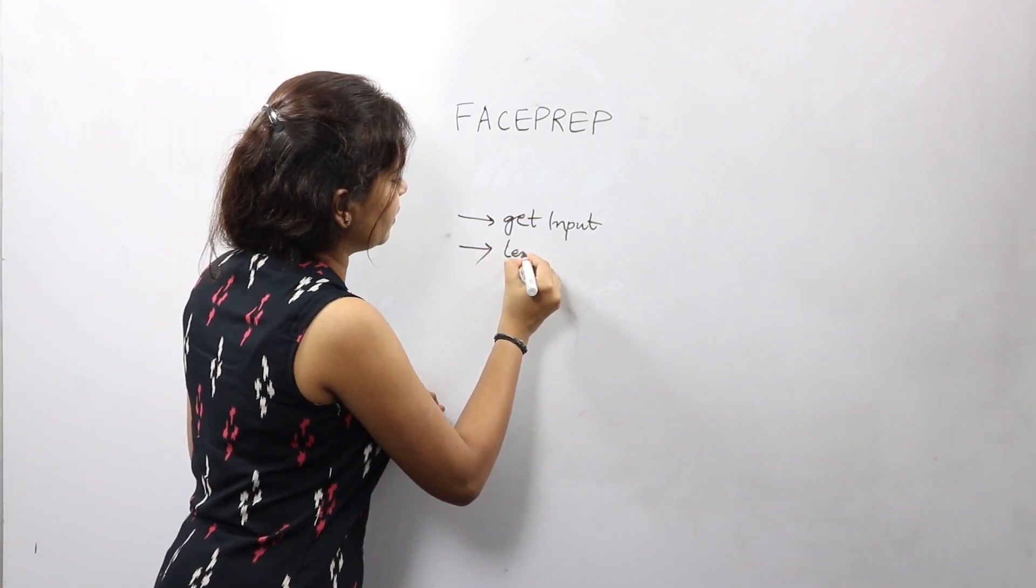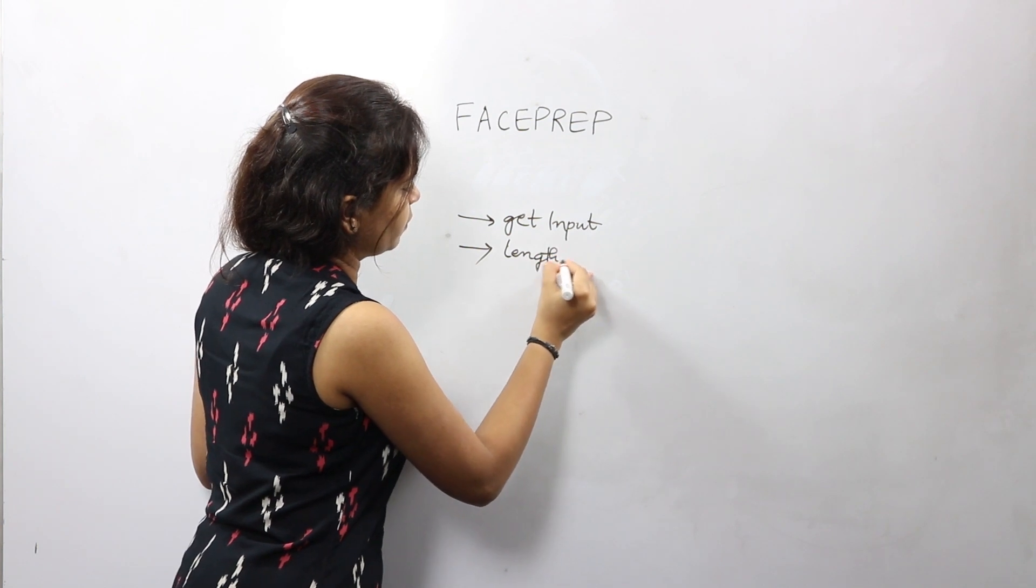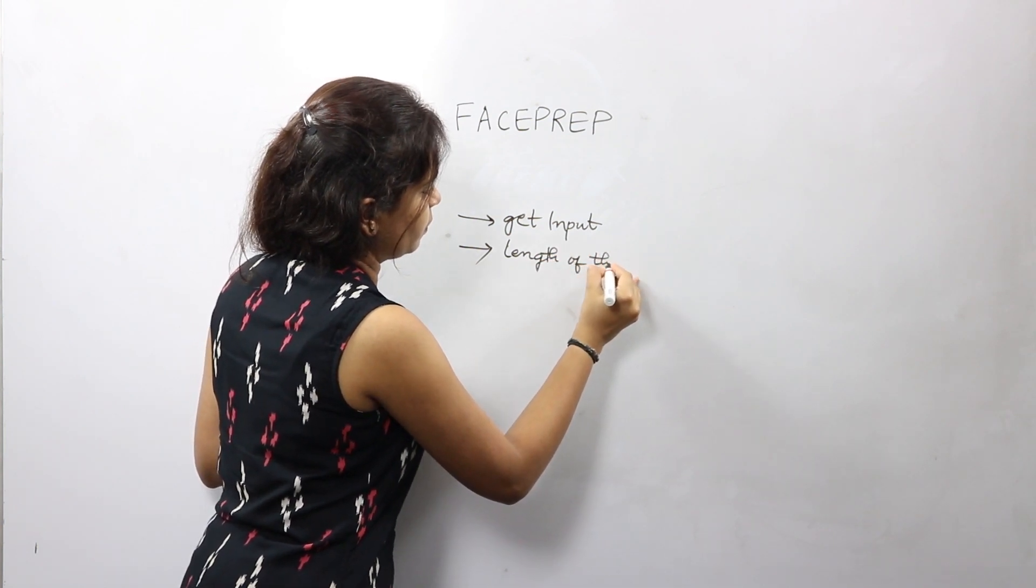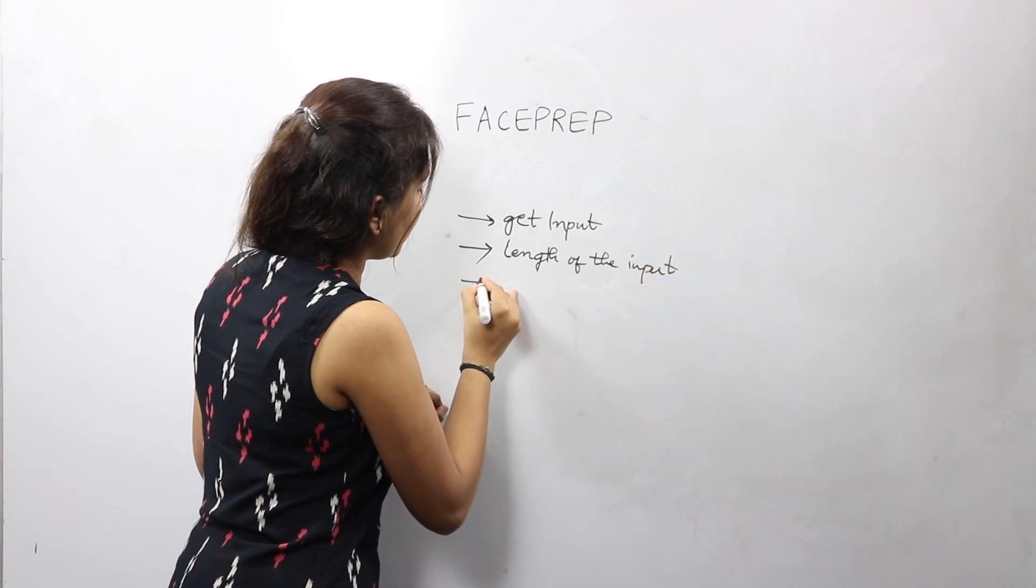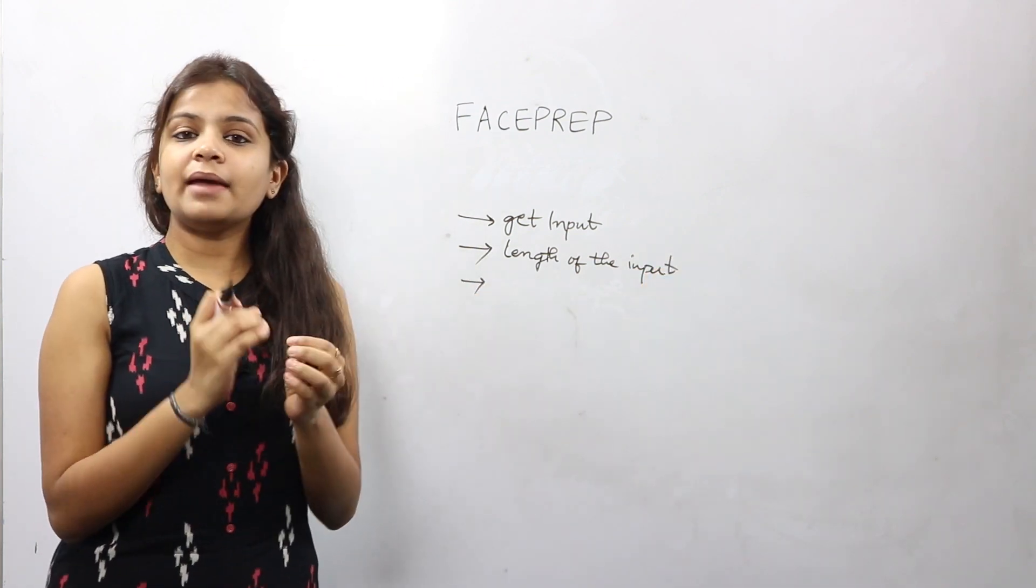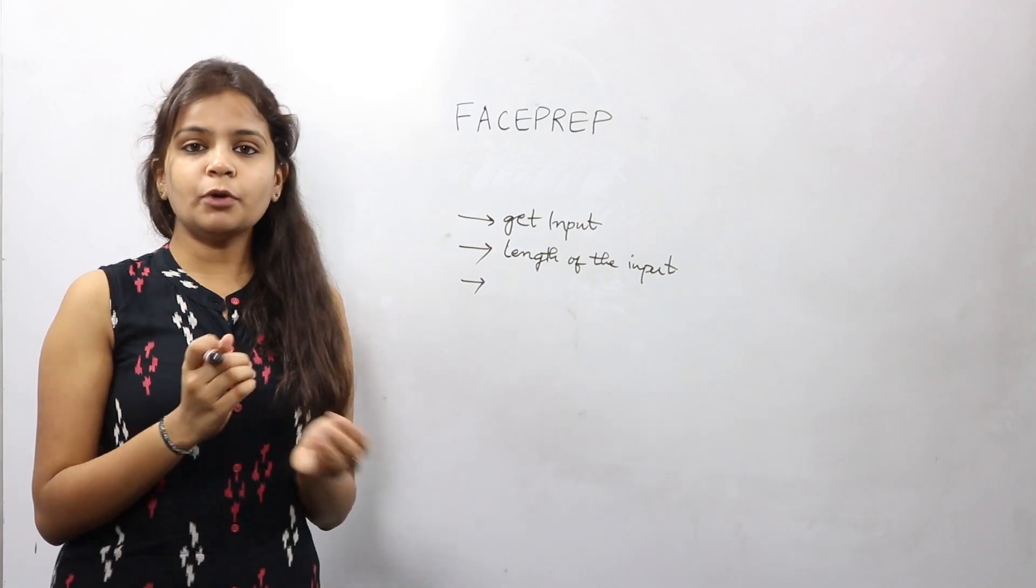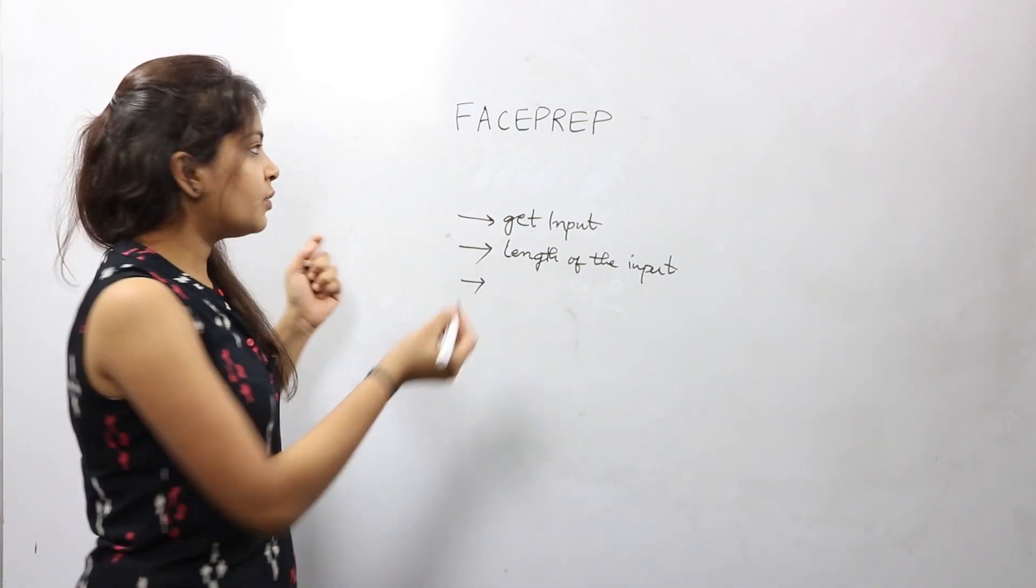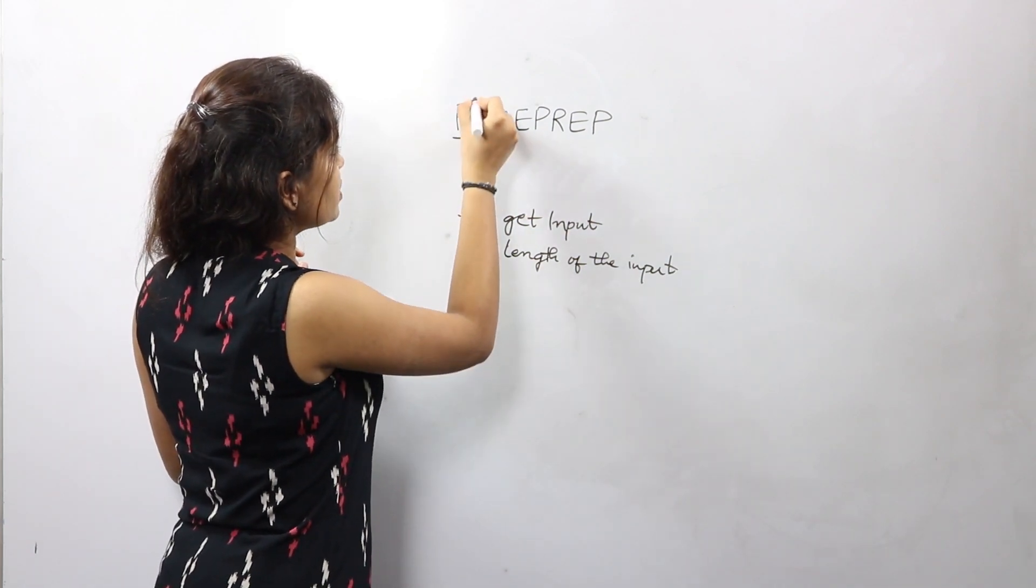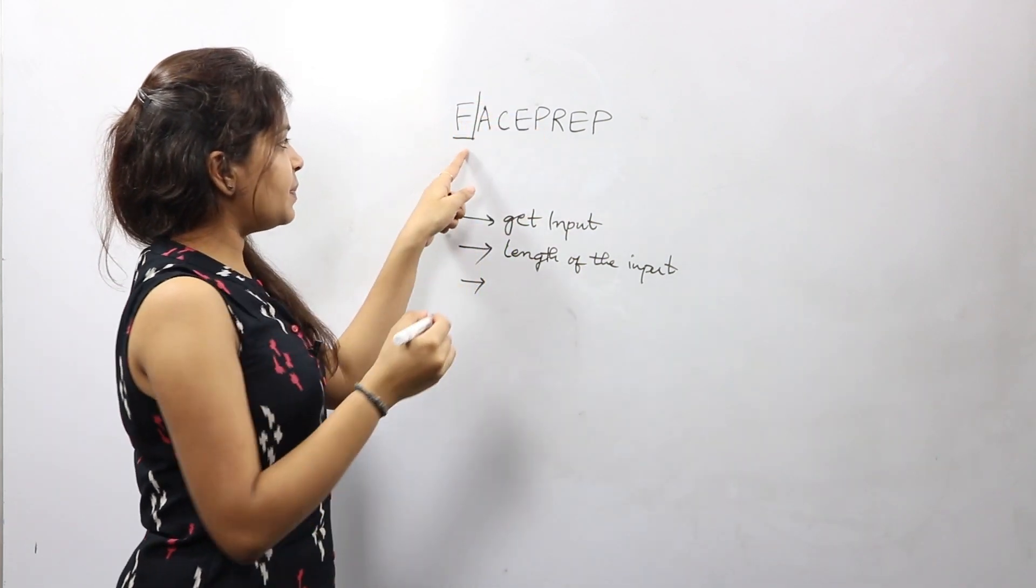Find out the length of the input and finally compare every character in this given input with every other character in the string. Starting from F, for example, F is the first letter, so F is being compared with A, C, E, P, R, E, and finally P.